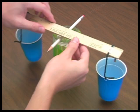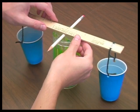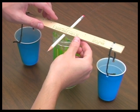Rest the ruler with attached cups on the pen or pencil so that the 6-inch mark is centered on the pencil forming a balance.